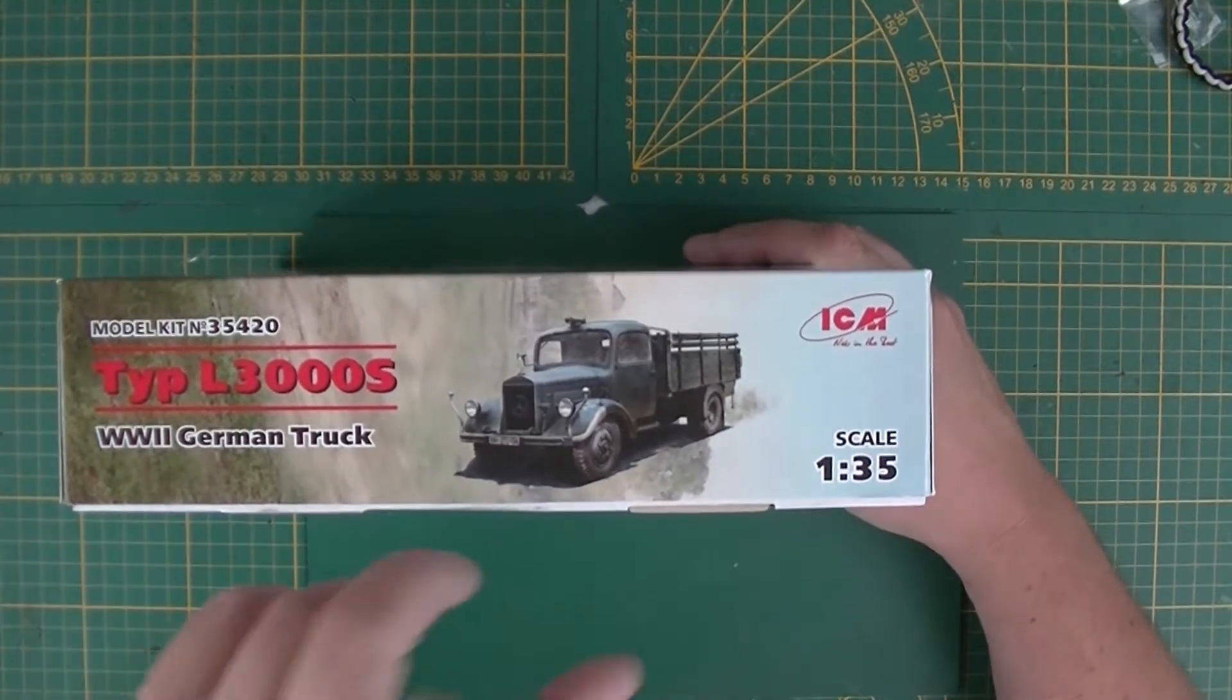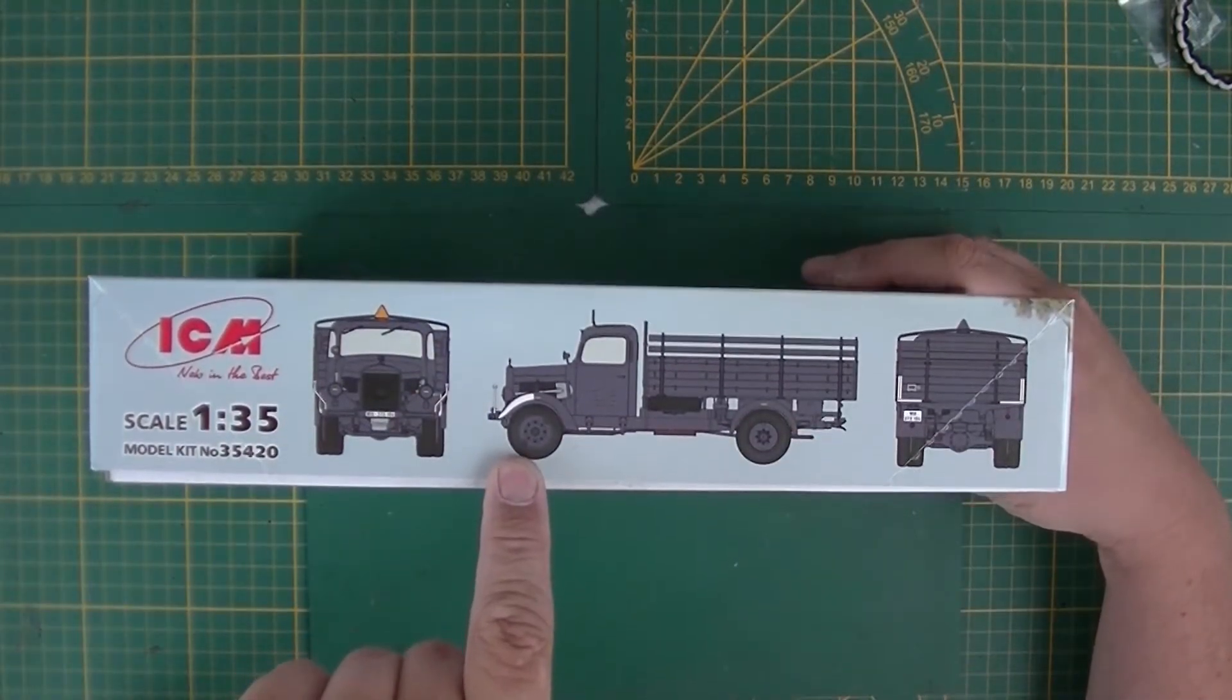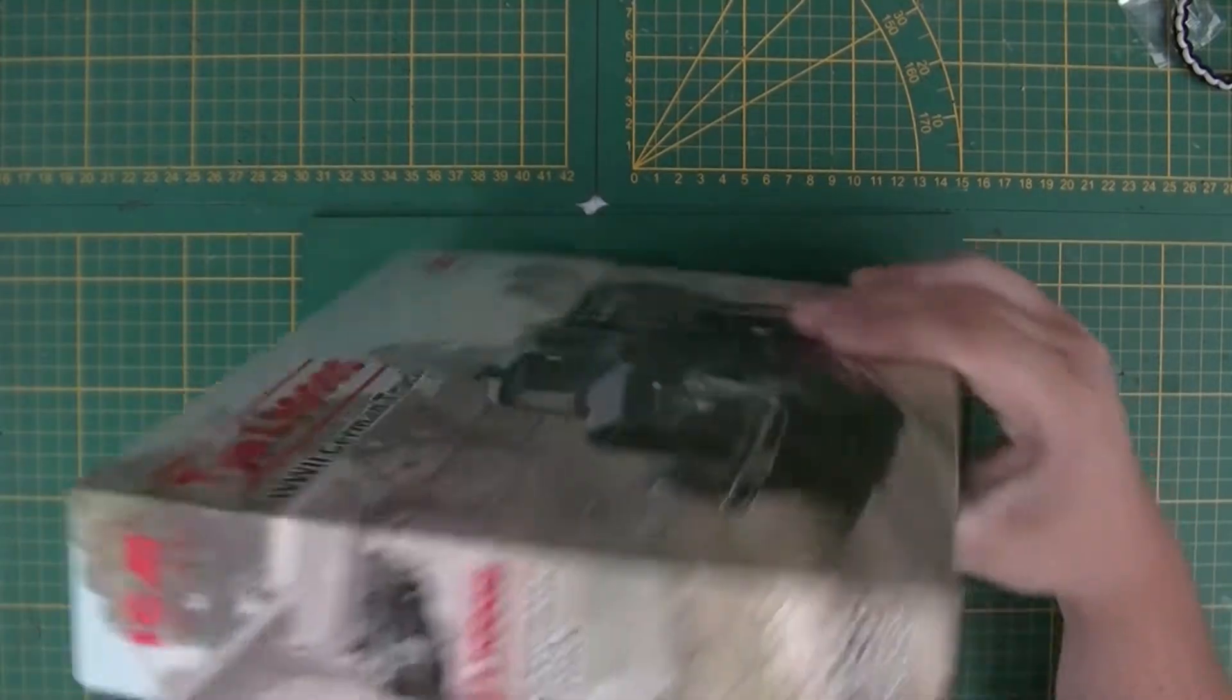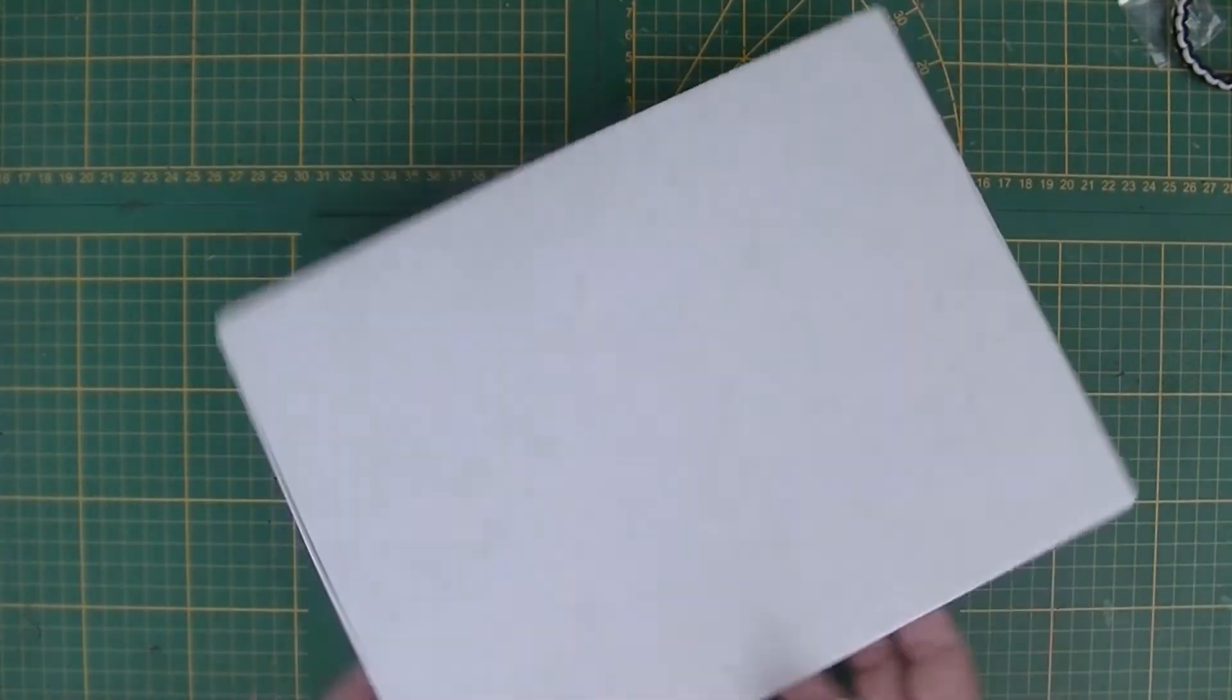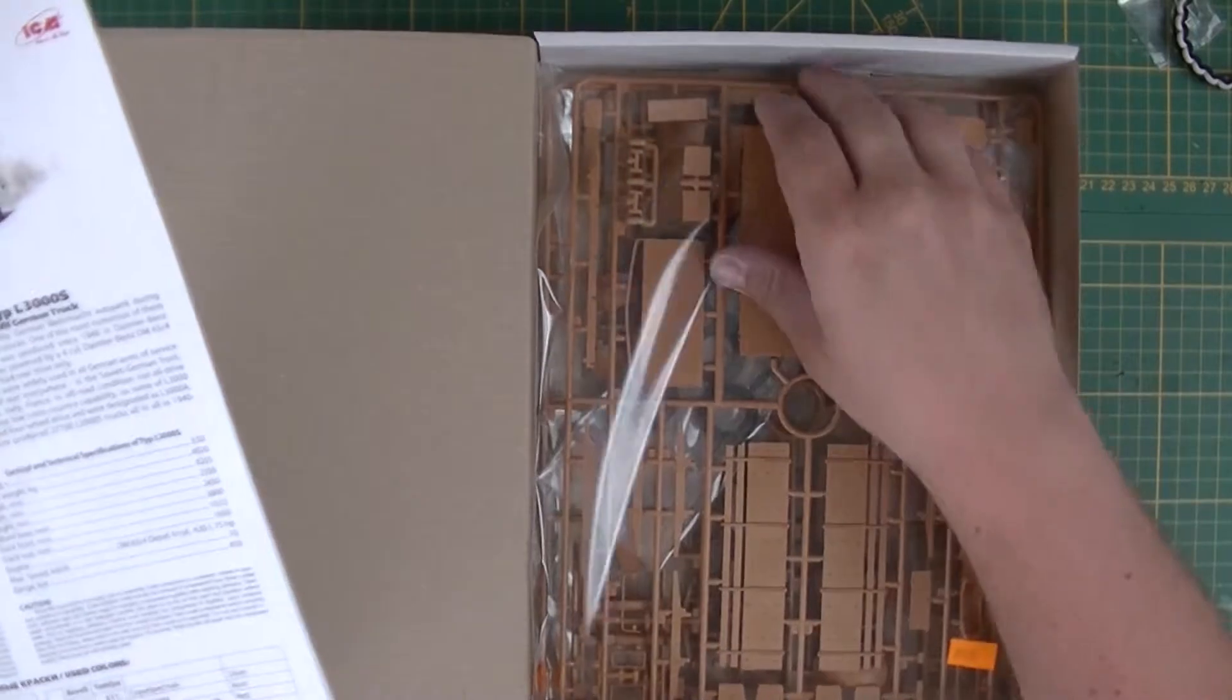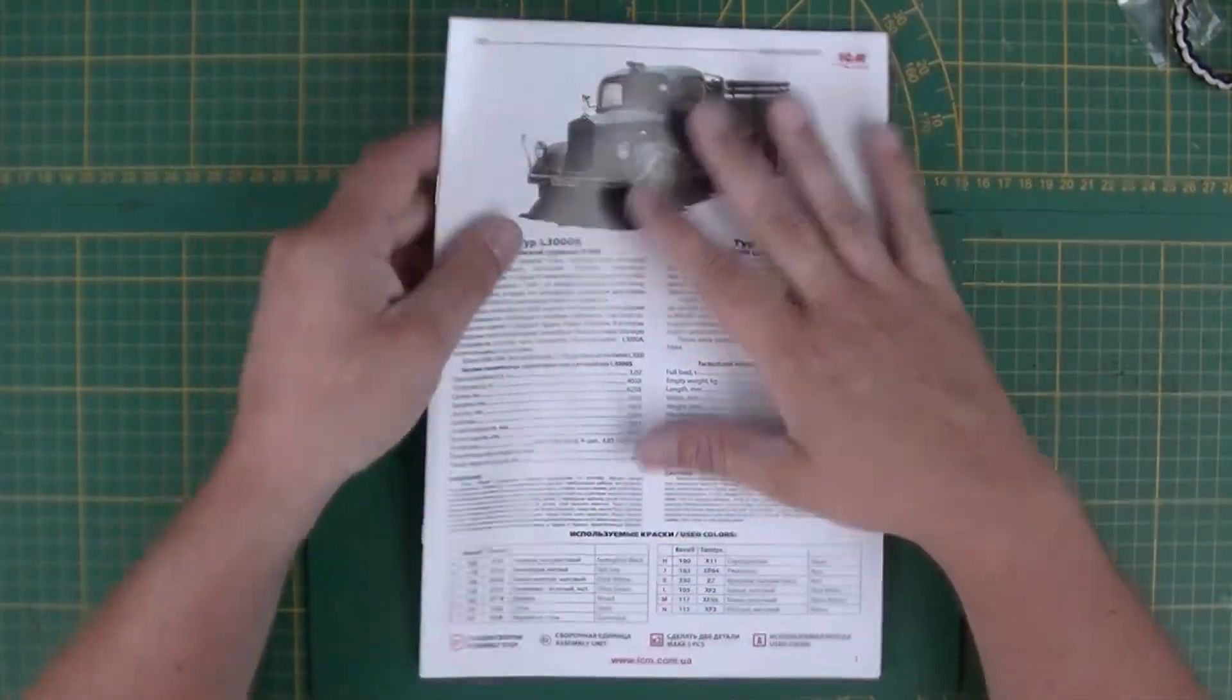On the side you got another box art with the kit number which is 35420. Here's some painting markings in German grey. Let's open this up. We have rather peculiar boxes as you can see. And here's the instructions sheet and one bag of sprues.